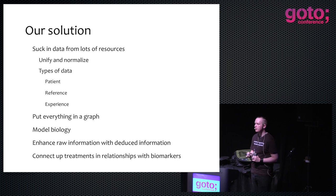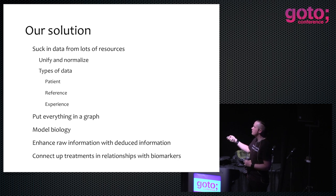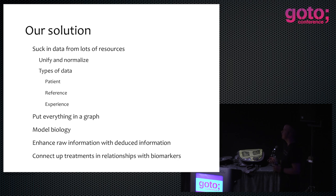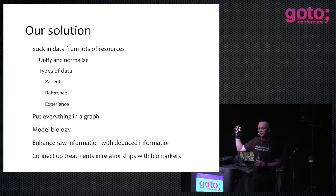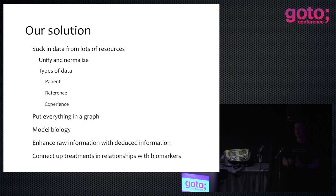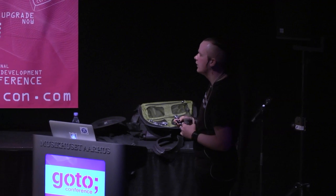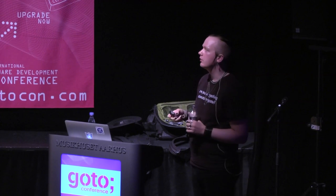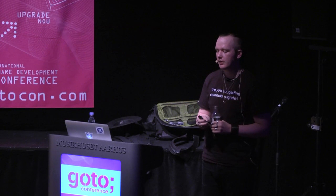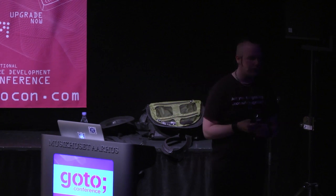We had three different types of data. We had patient data — all the biological data, patient history, and things like that. We had reference data — all the databases containing gene information or information about drugs and similar things. And then finally we had what we called experience data. The information is out there in the form of research papers or clinical trial data, but it's not in a useful format to automatically ingest into a system. So we had it formatted and synthesized into something we could use.